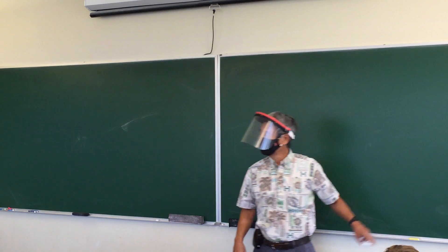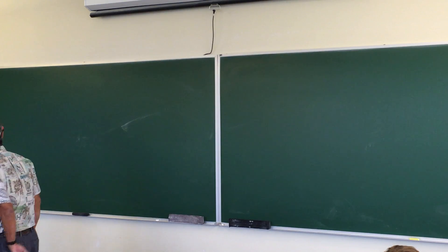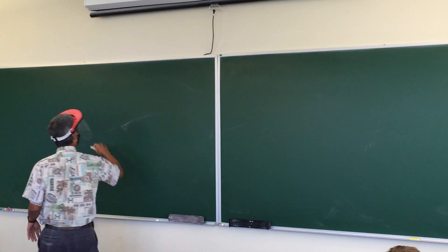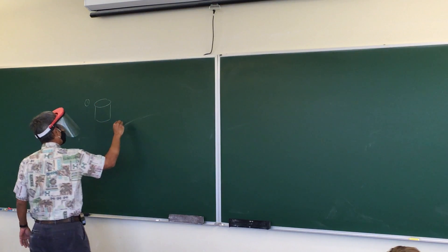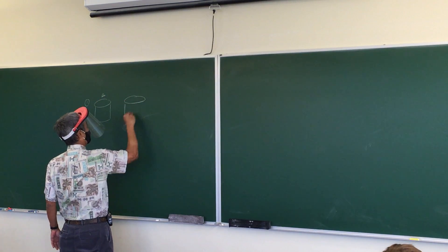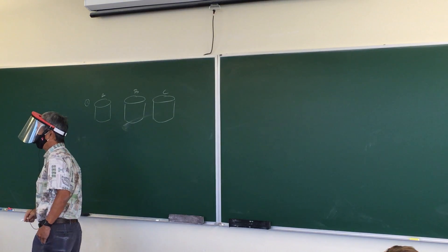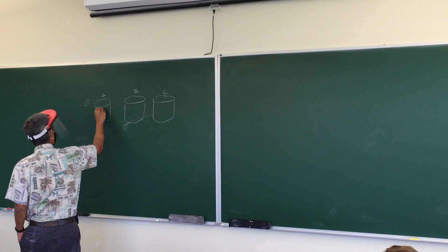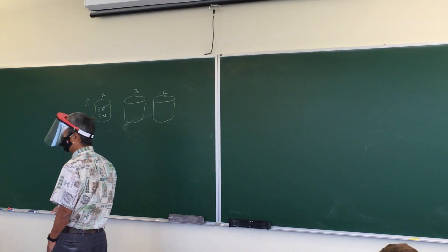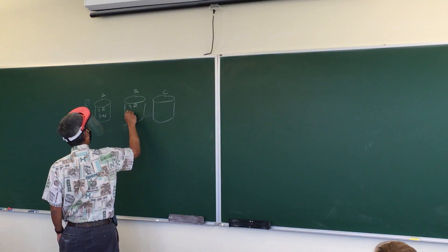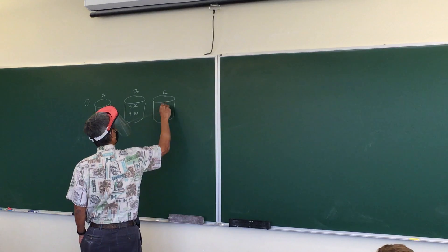Let's read number one. Jar A contains one red ball and two white balls. Actually, let me do an example just like number one except with different numbers. So you have three jars: jar A, jar B, and jar C. Jar A contains two red balls and three white balls. Jar B contains three red balls and four white balls. And jar C contains three red balls and one white ball.